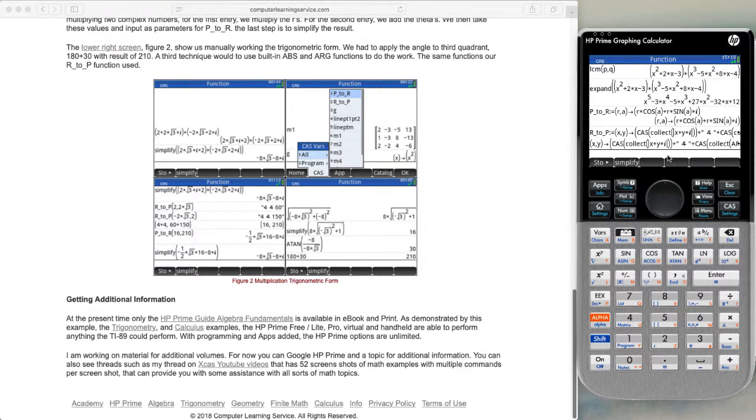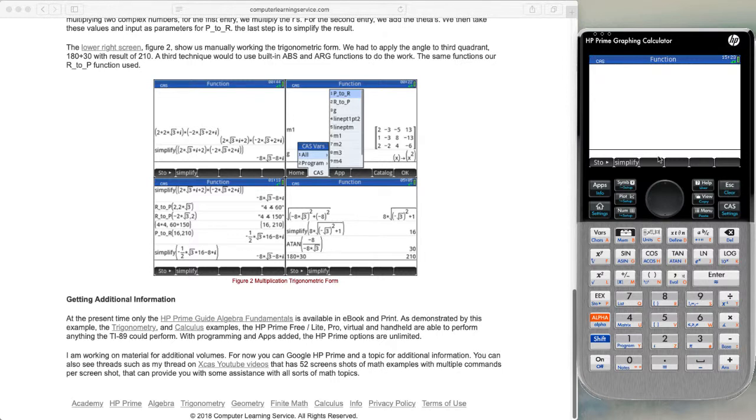Let's go ahead and do the calculations that we see on the two left screens. So we'll hit shift and clear. Then we'll hit parenthesis 2 plus 2 times square root 3. Get outside of the screen, type the letter I, get outside of the parentheses, type times, parentheses,